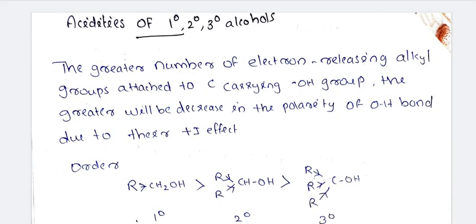Greater the number of electron releasing groups attached on carbon, greater will be the decrease in the polarity of O-H bond, reducing the group acidity. Electron releasing groups, also called electron donating groups, have a plus I effect. Examples include R groups and CH3.